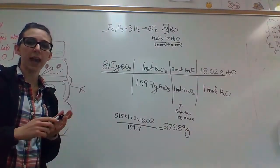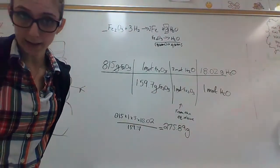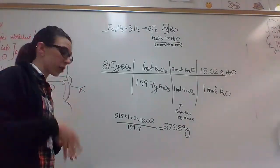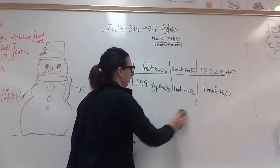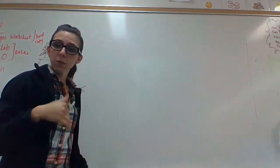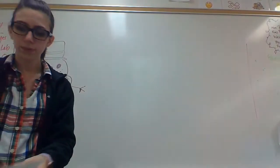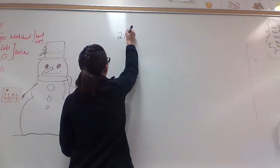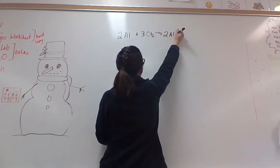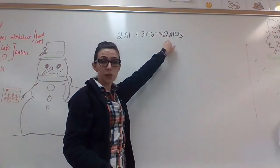Feel free to pause if you need to look at this again. I'm going to erase it and then we're going to look at number seven on the backside. Number seven is comparing two different ones to see which one is the limiting reactant in the equation.